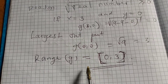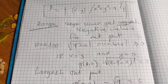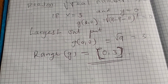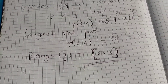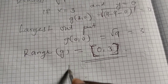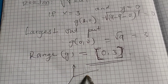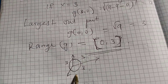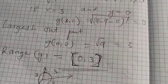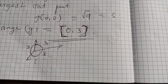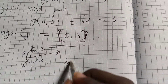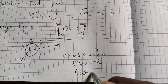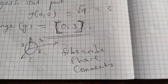That is how to calculate the domain and range of multivariable functions in irrational form. You can also present the range graphically in a circle where the radius equals three. Thank you for watching — I hope you enjoyed the video. Please subscribe, share, comment, and God bless you.